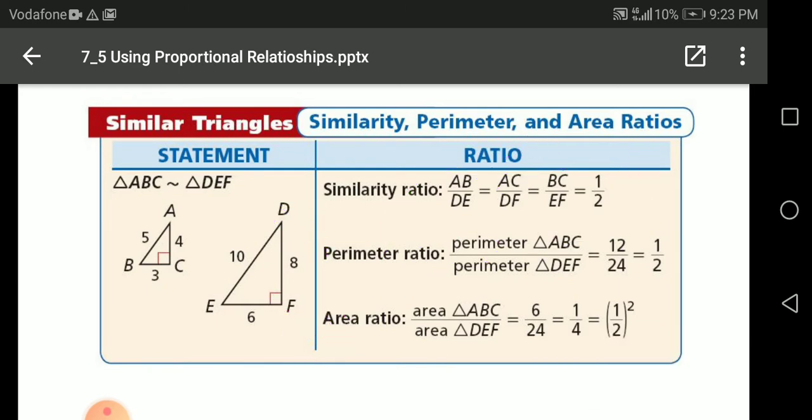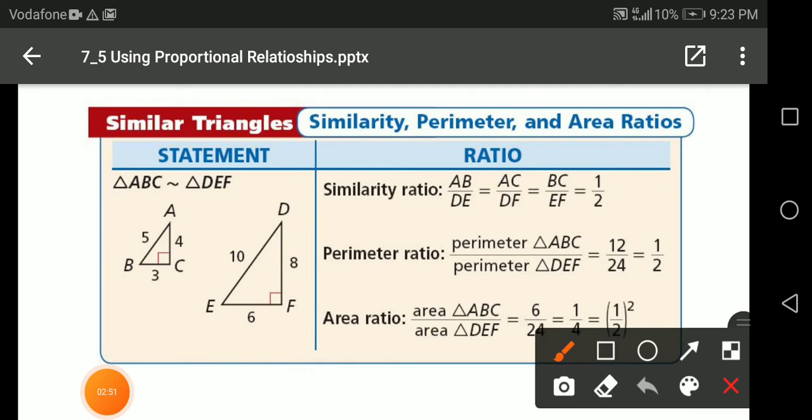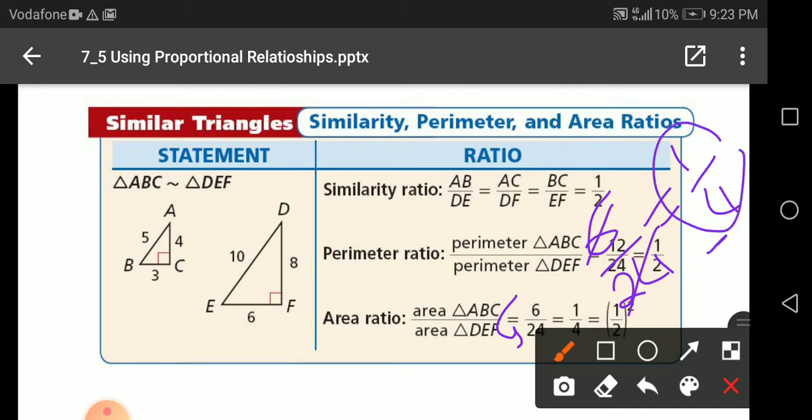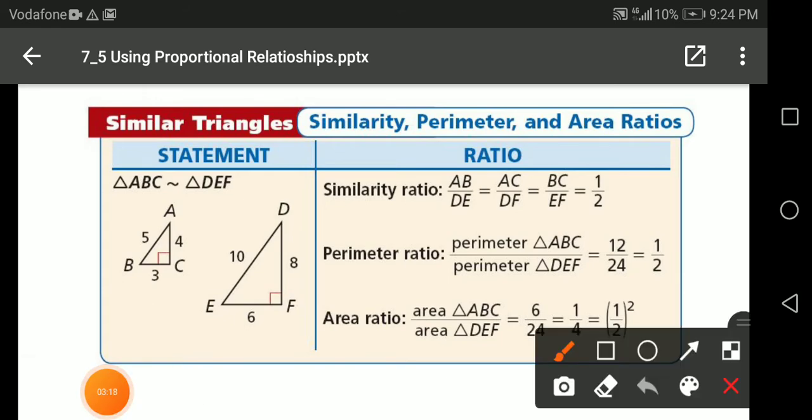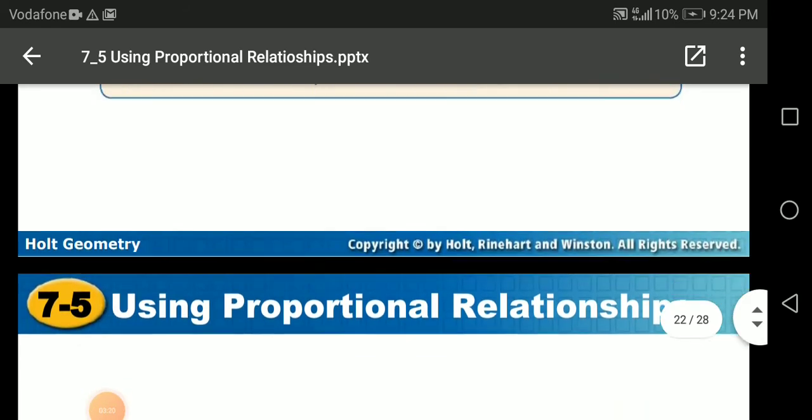So if we do here the two areas, the ratio of the two areas, 6 over 24, after simplifying 6 over 24, it will give you a fourth. Remember this fourth, it's the squared of what? Of half. It's squared of half. So we have got here half squared. So it's the same as half squared.